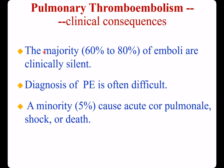Summary of pulmonary thromboembolism: the majority — nearly 60% to 80% — of embolisms are clinically silent. Diagnosis of pulmonary thromboembolism is often difficult. A minority, accounting for about 5%, cause acute cor pulmonale, shock, or death.